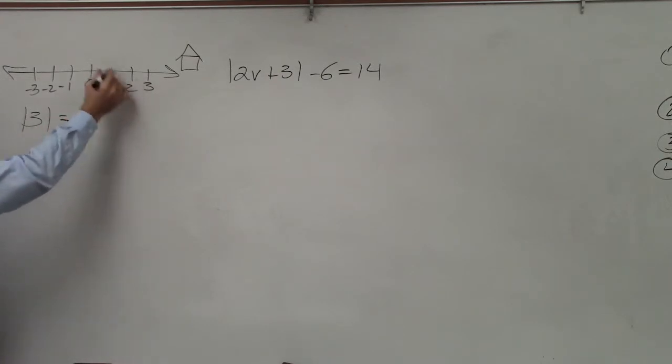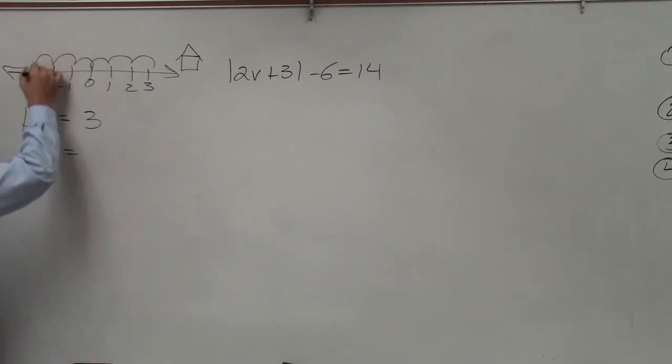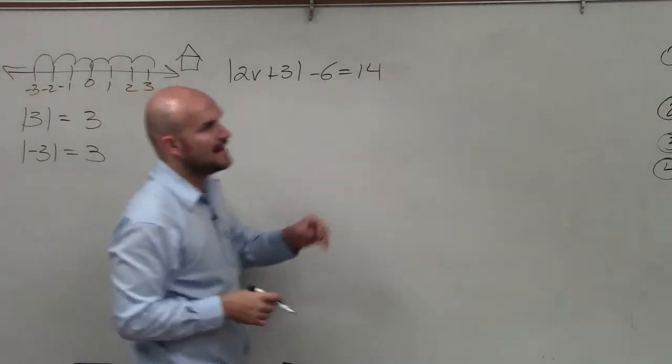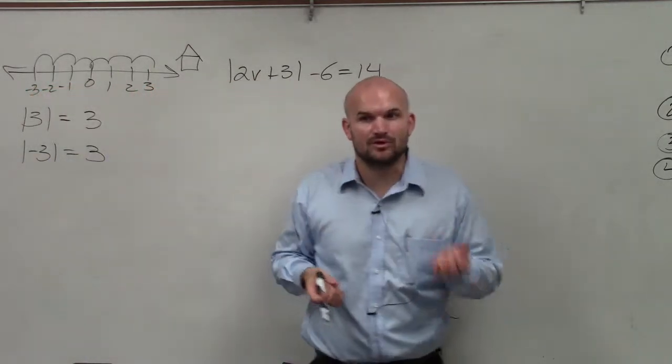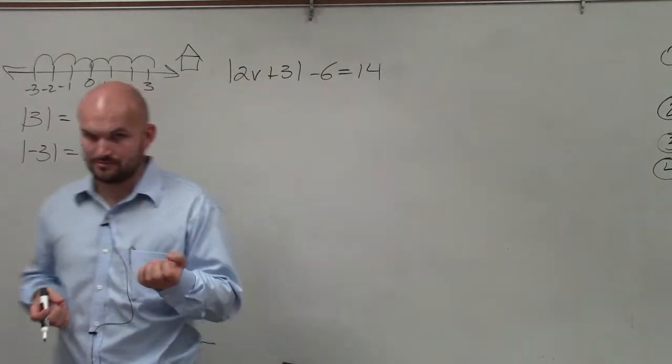So the absolute value of 3 is 1, 2, 3. Absolute value of negative 3 is equal to 1, 2, 3. The important thing you remember is the absolute value always equals a positive value.